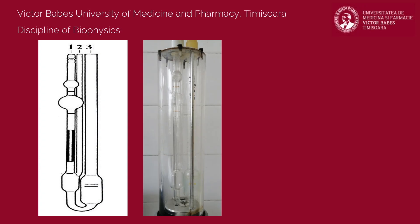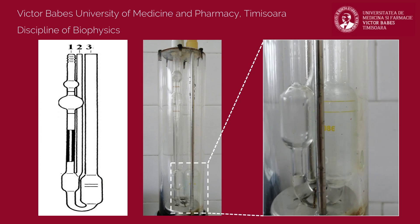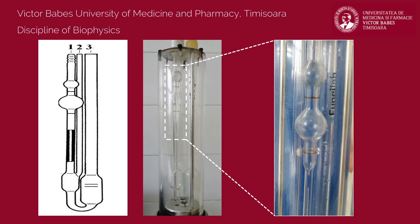The viscometer is a glass tube with three branches. Two of these branches have reservoirs. The lower one must be initially filled with solution to a level in between the two marks. The upper one has a well-defined volume between two other marks and sits above a capillary tube that ensures a laminar flow of the liquid.